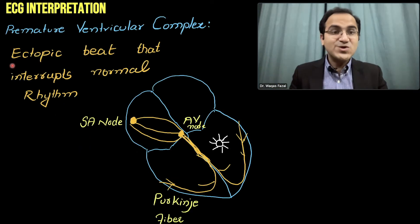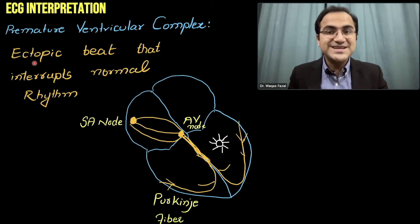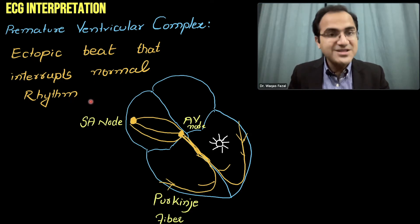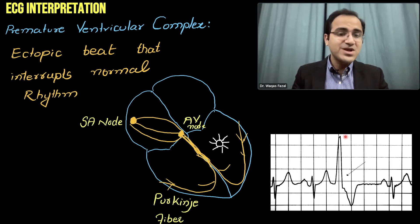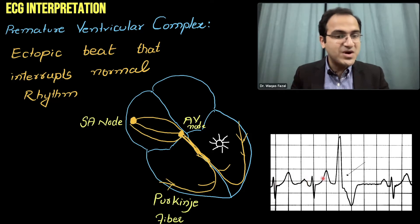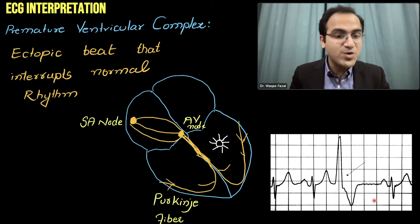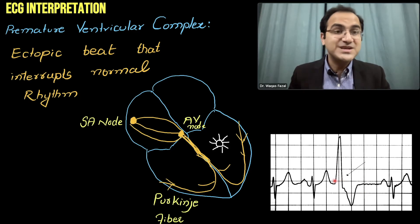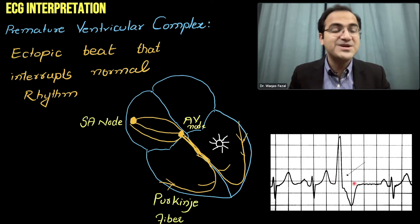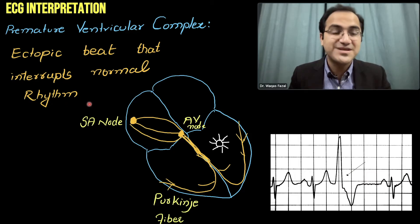A premature ventricular complex is an ectopic beat that interrupts the normal rhythm of the heart. On the ECG, normal sinus beats are going on, and in between, a premature ventricular complex appears — a disturbance in the normal sinus rhythm that interrupts the regular beats.